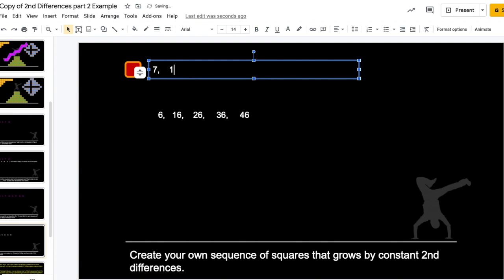So, if I do 7 plus 6 is 13. 13 plus 16 is 29. 29 plus 26 is 55. 55 plus 36 is 91, I think. 91 plus 46 is 137.